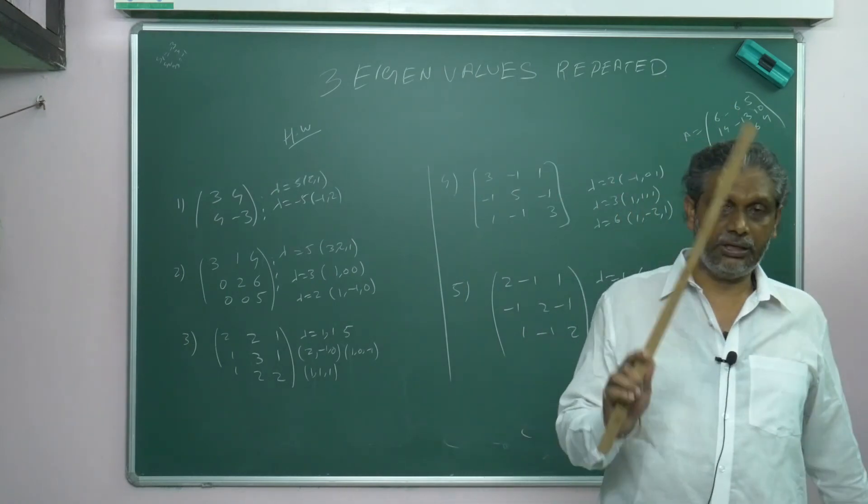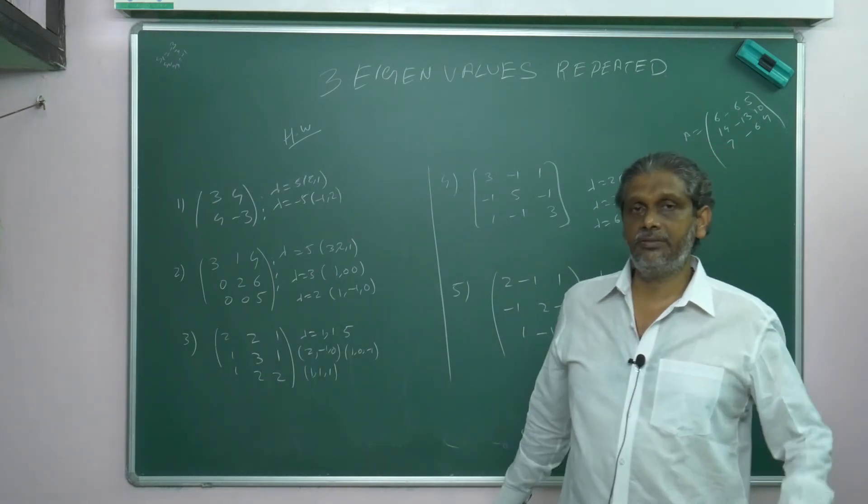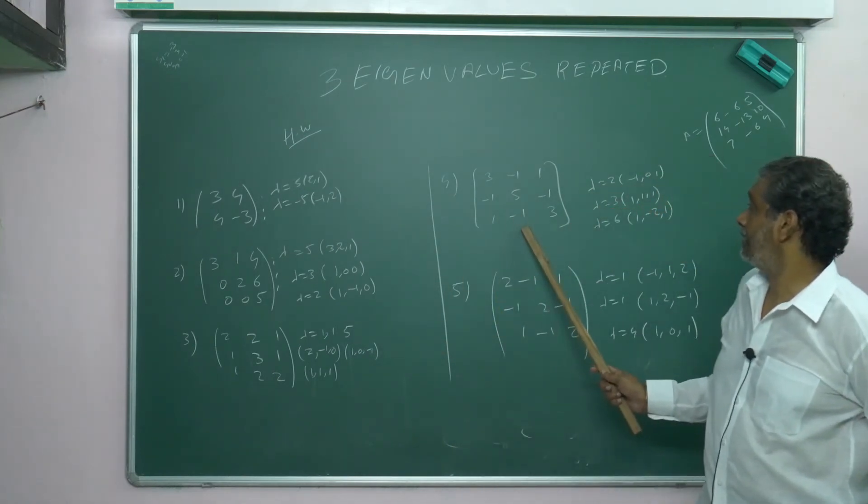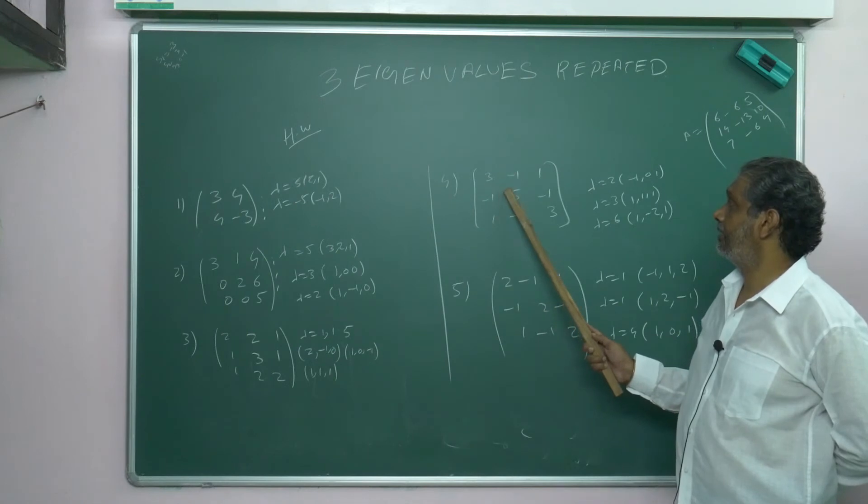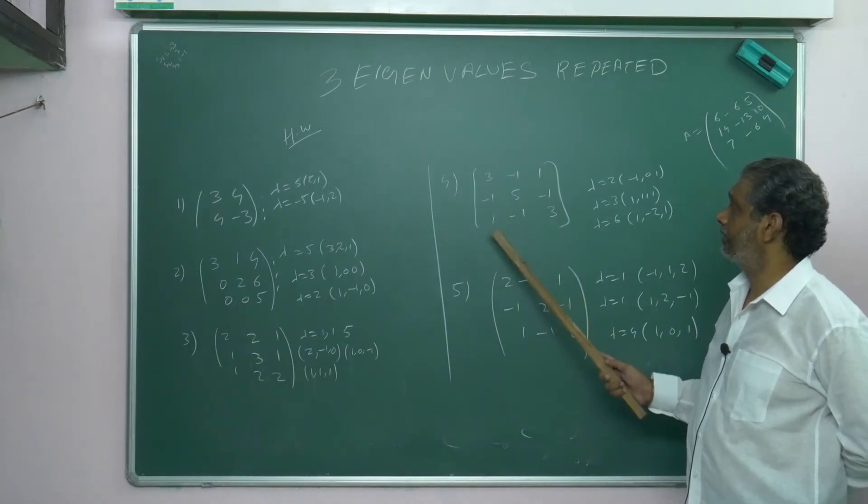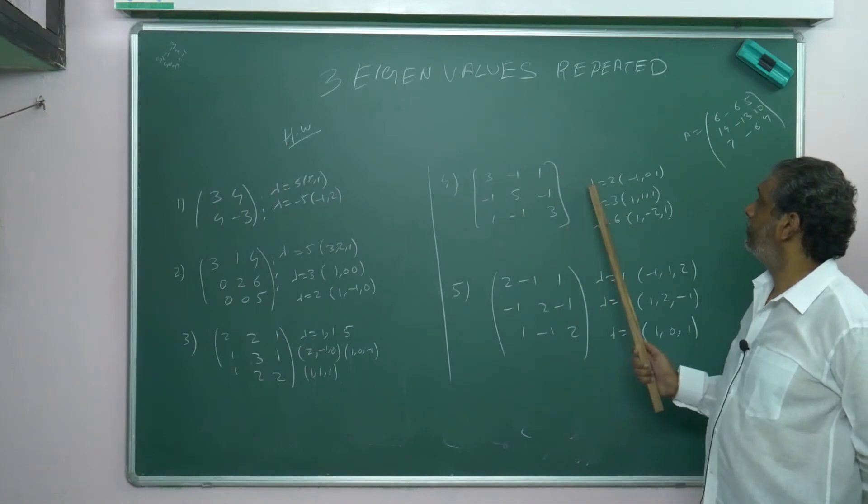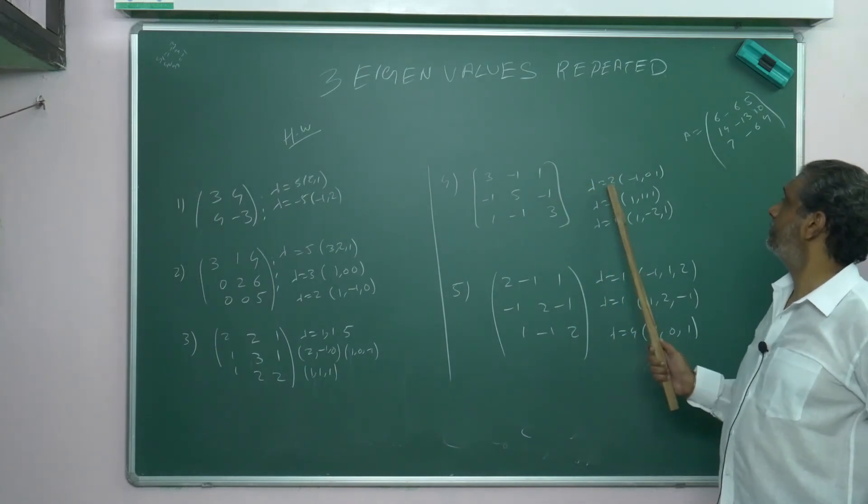Don't at all think whatever matrix you can attack. Now we see this fourth matrix, given as a symmetric matrix: 3, -1—see first row, first column same, second row second column, third row third column same. Eigenvalues are 2, 3, 6. Two means (-1, 0, 1), three means (1, 1, 1), six means (1, -2, 1).